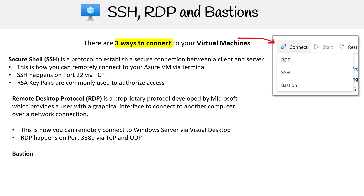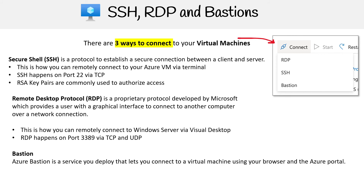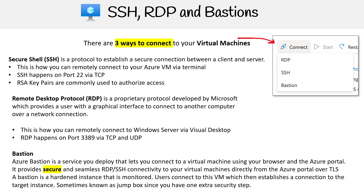Then you have Bastion, which is your third option. Azure Bastion is actually an Azure service that you can deploy; it lets you connect to a virtual machine using your browser and the Azure portal. The reason why this is so useful is that if you have, let's say, a Chrome desktop which can't actually use an SSH client or RDP client, this just gives you another way of using the browser. So you don't have to install those clients, but we'll get into that shortly.